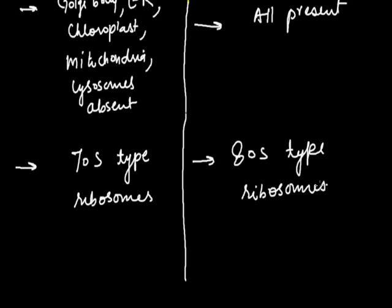This was all about the difference between prokaryotic and eukaryotic cells. In the next lecture, we are going to discuss some important cell organelles. Thank you so much.